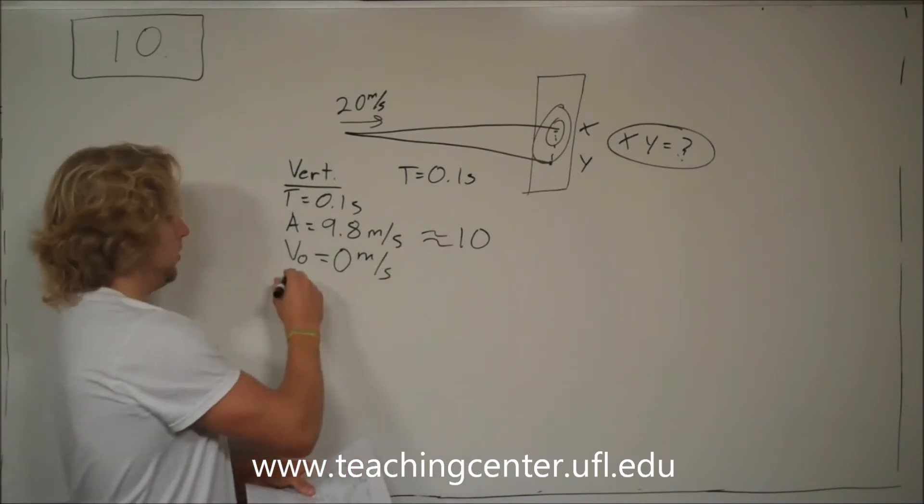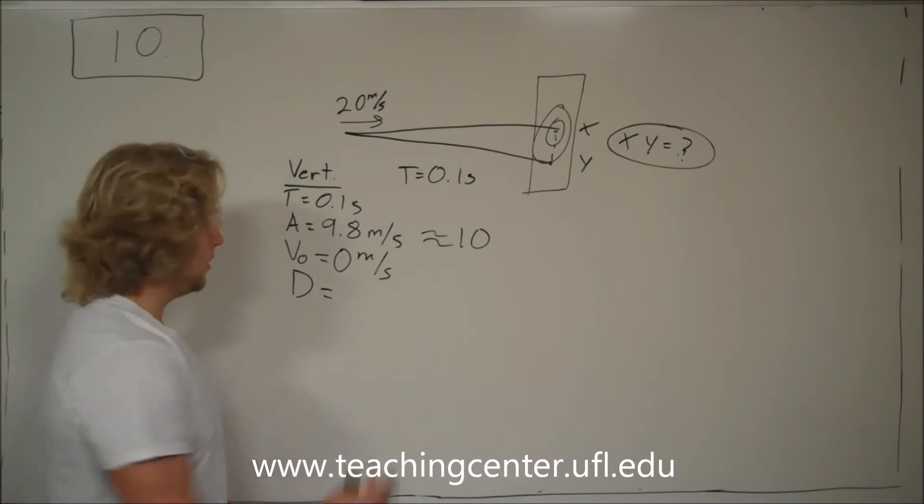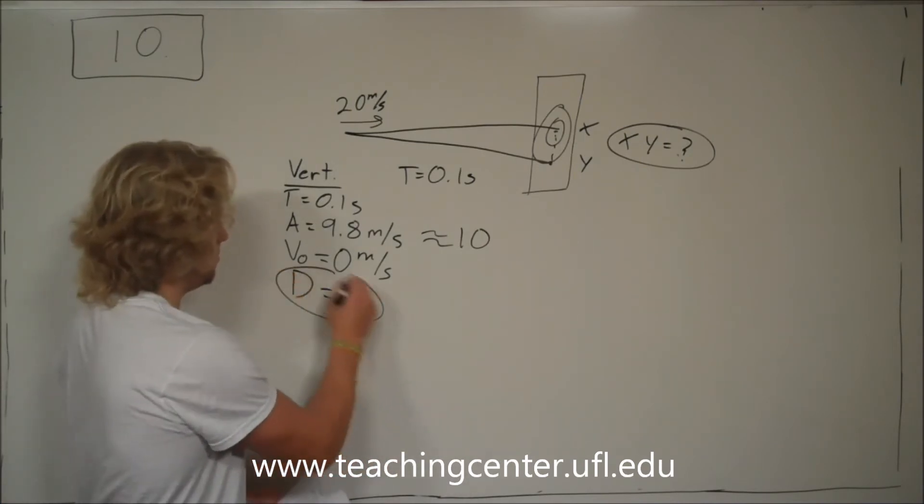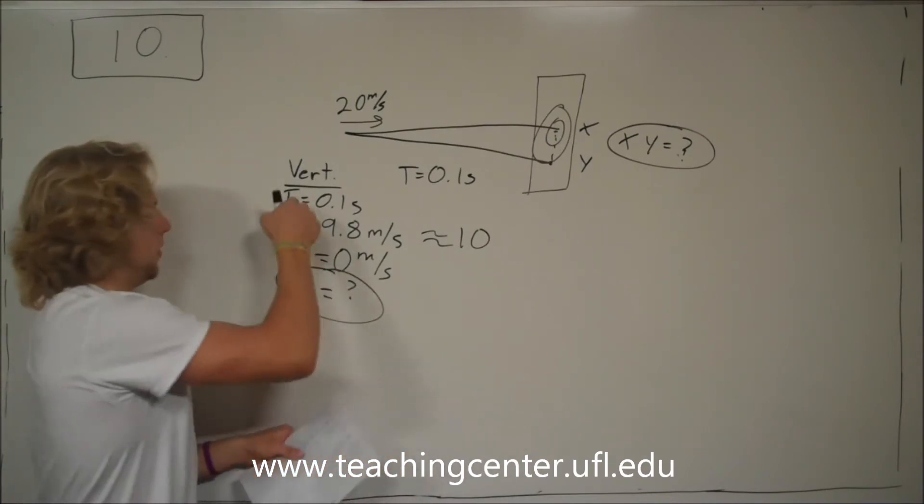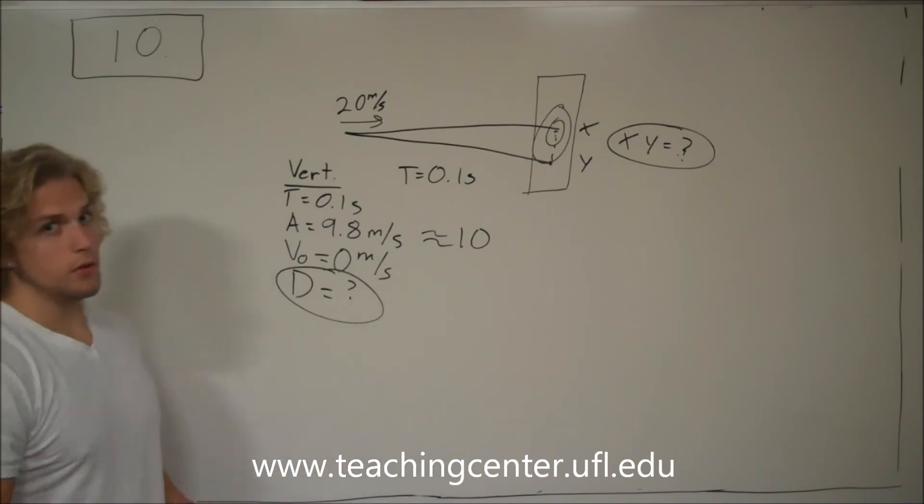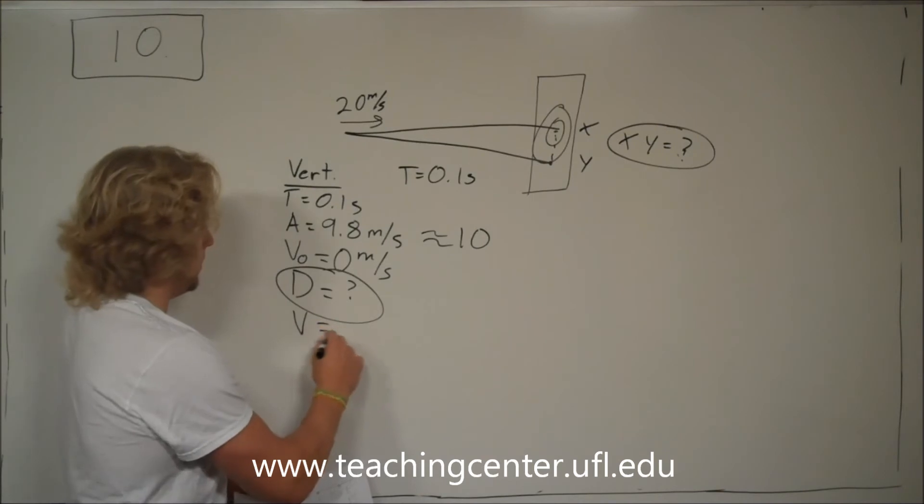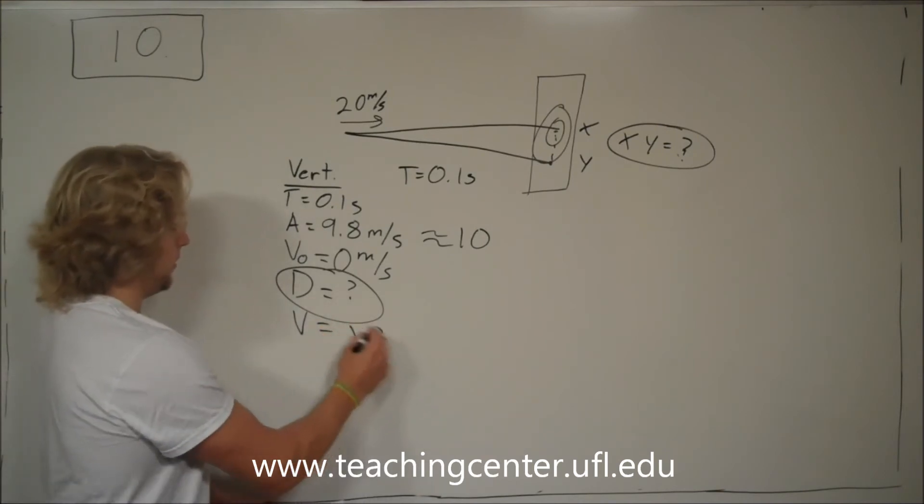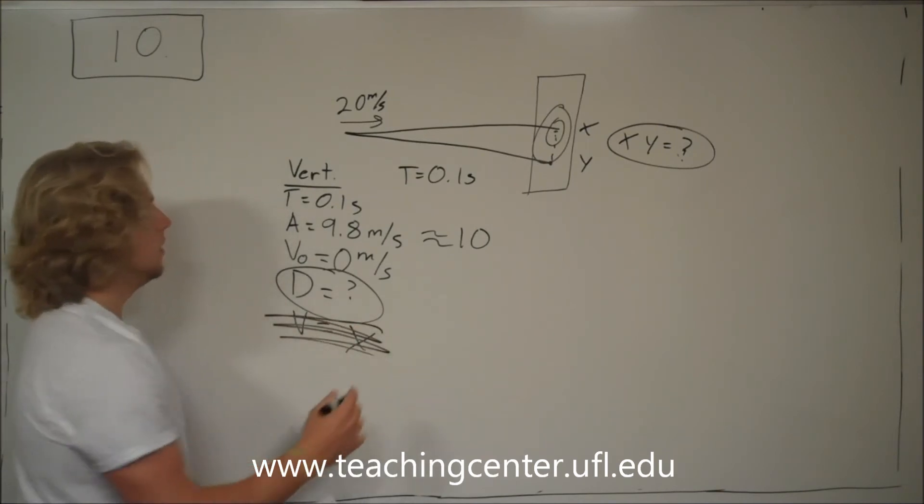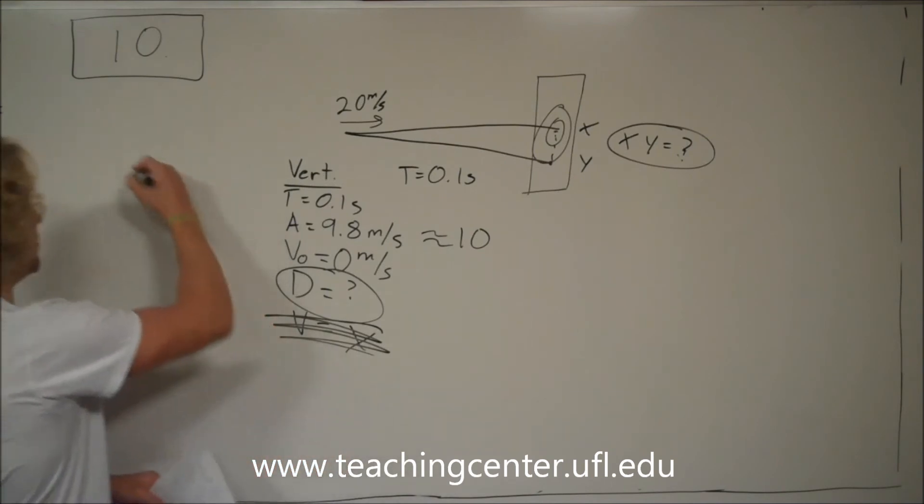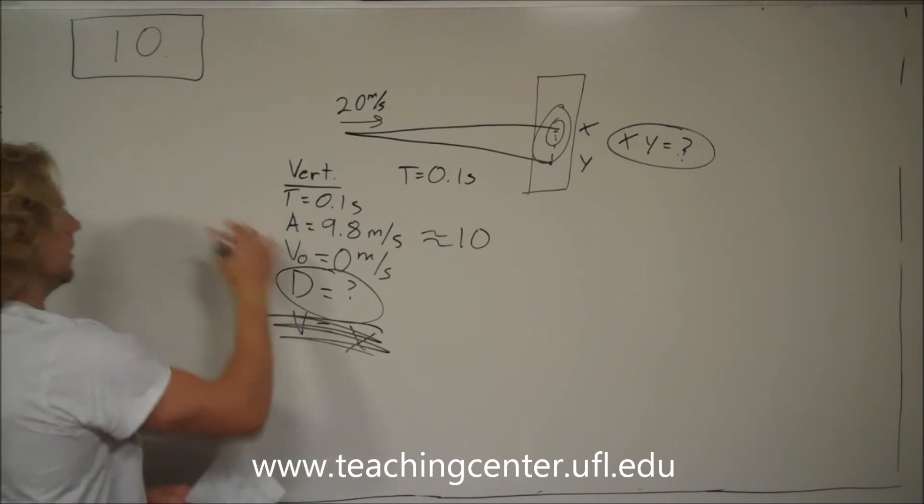So, we're looking for d. That means we have 4 out of the 5 components of kinematics. The one that's missing is v. We don't care about this. That means we go over to the handy dandy chart of our kinematic equations.